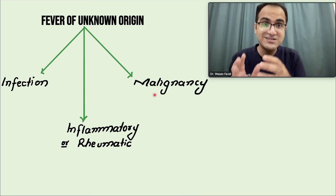A very important point to remember: the majority of patients with fever of unknown origin present with atypical symptoms of common diseases rather than common symptoms of rare diseases. You should always have knowledge of atypical presentations of common diseases as well as common presentations of rare diseases — this is very important.